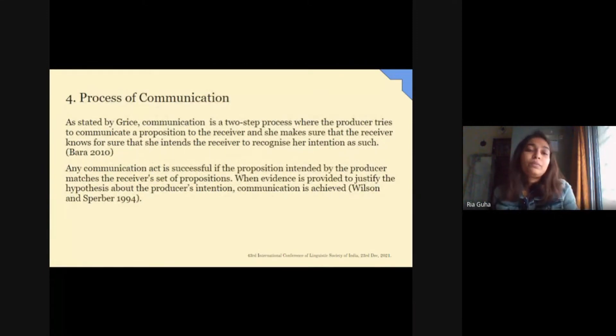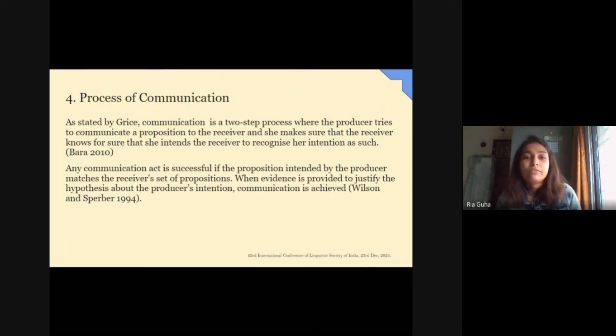Now, you see the process of communication, how it happens. According to Grice, communication is a two-stage process where the producer tries to communicate a proposition to the receiver and she makes sure that the receiver knows for sure that she intends the receiver to recognize her intention as such. Then why do we have miscommunication?